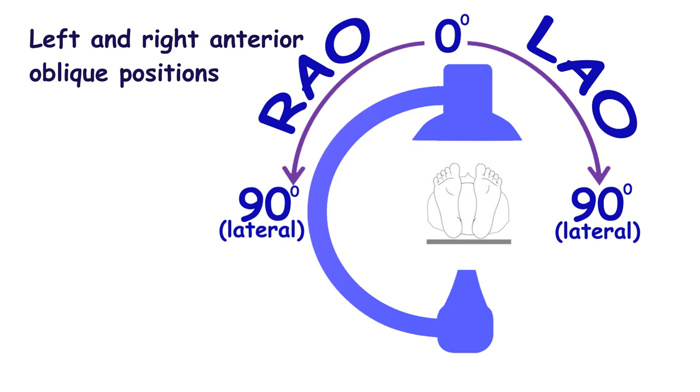If the image intensifier is rotated to the right side of the patient, this position is called right anterior oblique, or RAO. If the image intensifier is rotated 90 degrees in either direction, the position is called lateral.